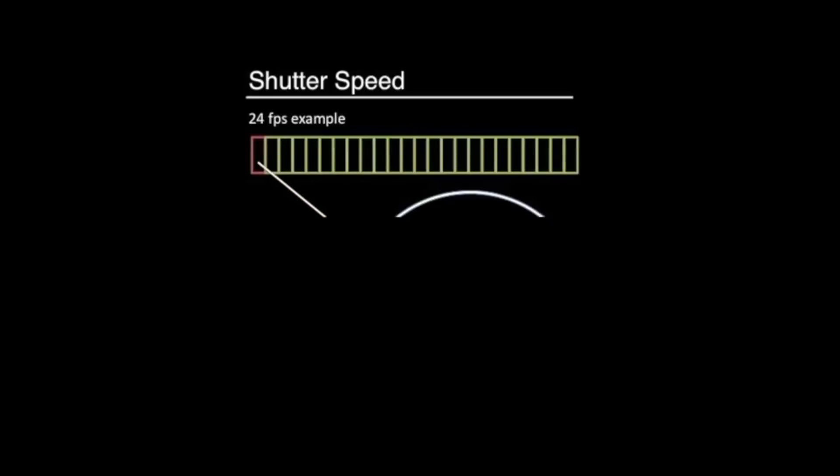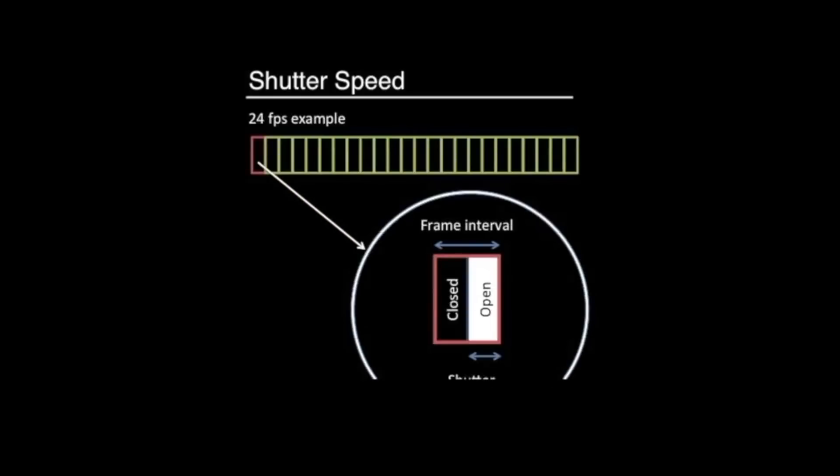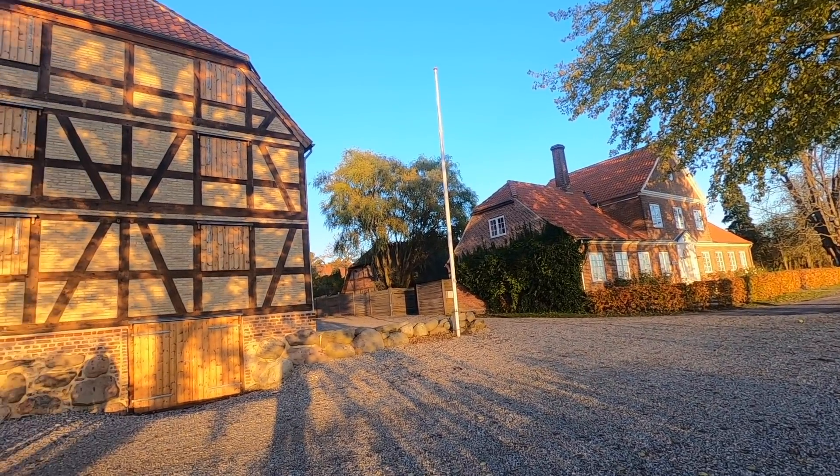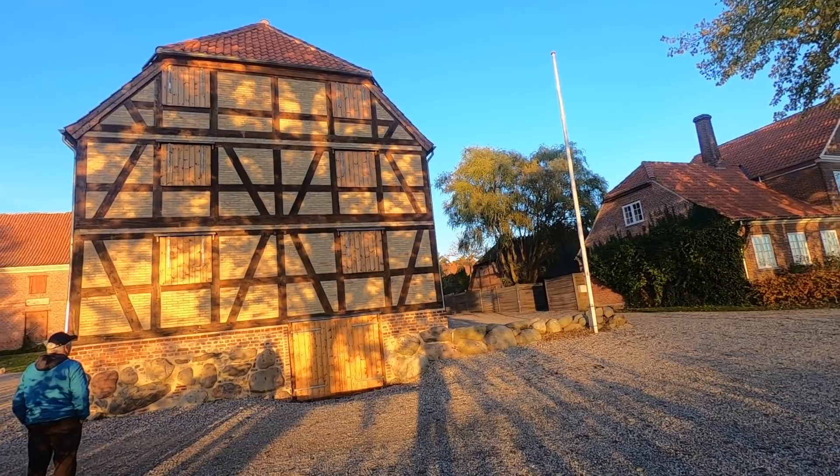The shutter speed is the time that the sensor is exposed to light. With changing the shutter speed we can change the look of the footage as well. With a fast shutter we are able to freeze motion because we limit the time that the sensor is exposed to light. This is very useful if you want to capture motion in photography, but in video this is most of the time a side effect, as this will make your footage look stuttery and jerky and not buttery smooth.